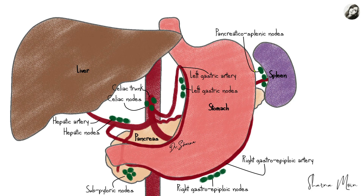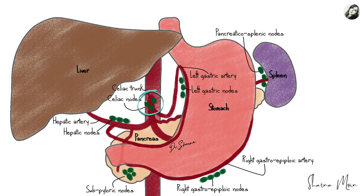These lymph nodes are named according to the arteries present there or on the basis of their location. The red structure is the abdominal aorta, and on the front side of the abdomen we have the ventral branch known as the celiac trunk. A group of lymph nodes present here is known as the celiac nodes — this is the main group, and all the lymph nodes of the stomach ultimately drain into the celiac nodes.